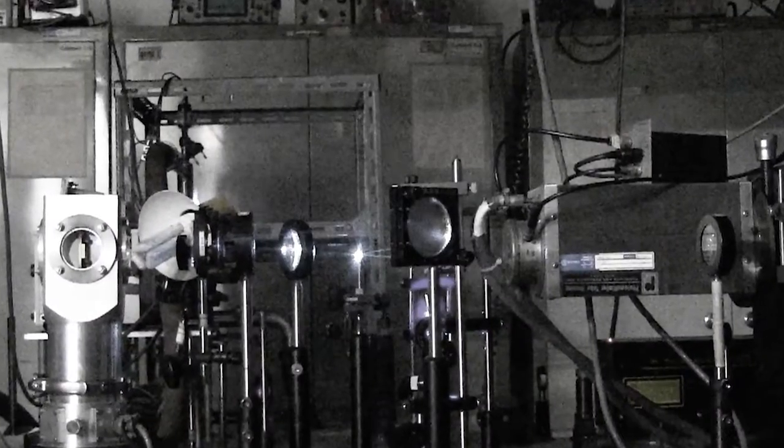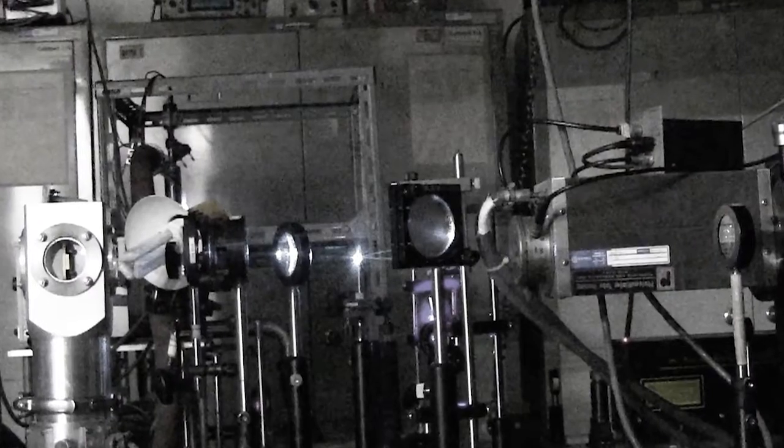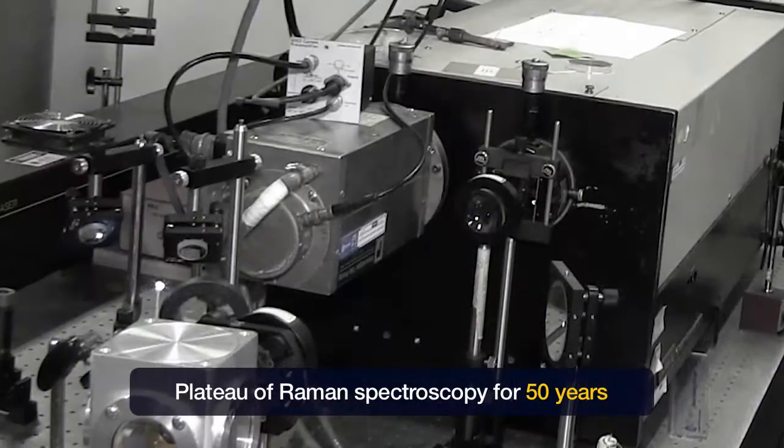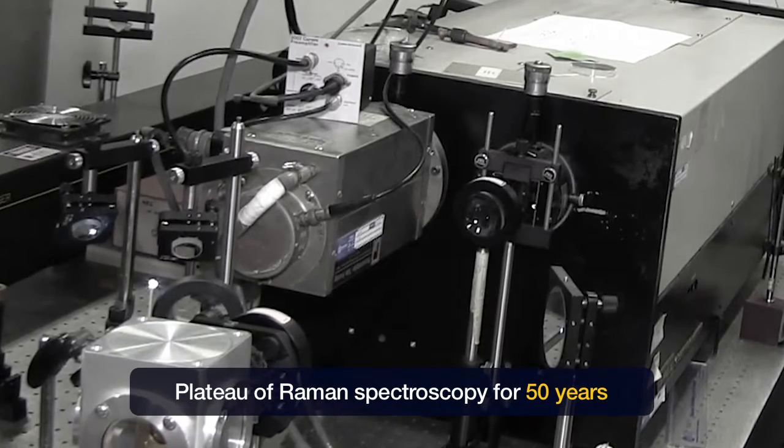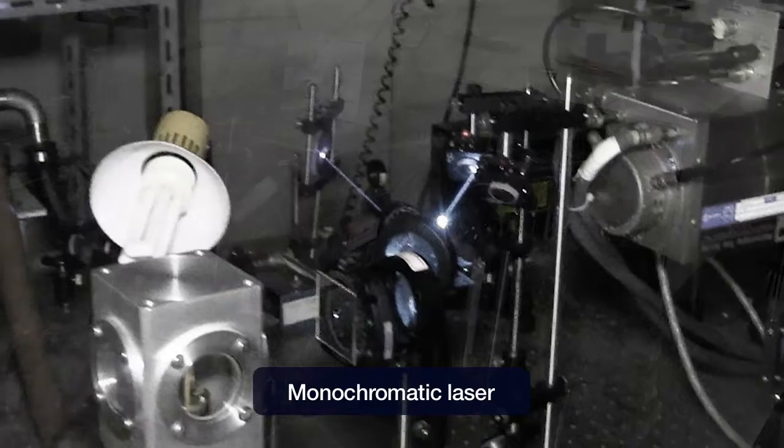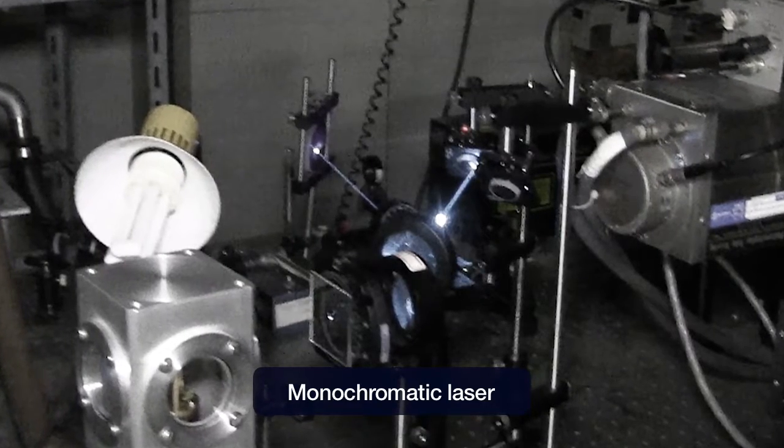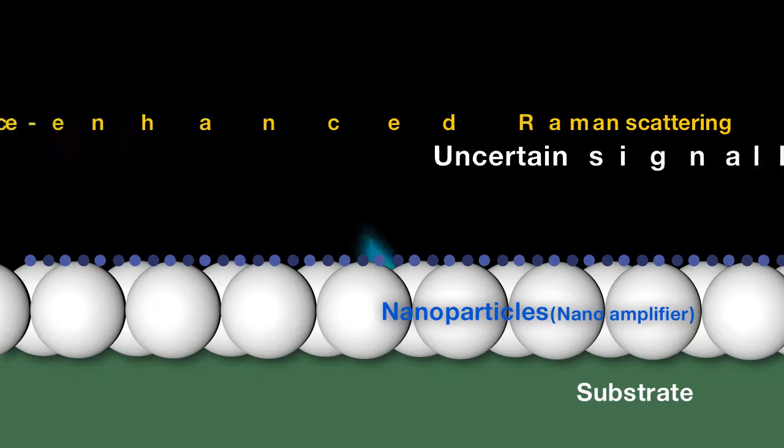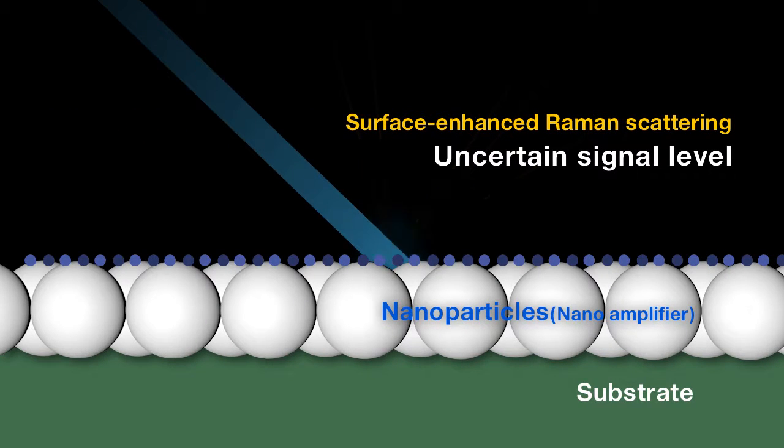However, classical Raman spectroscopy, relying on a lab-based light source, did not really proceed much for the next 50 years until the 1970s. In the 1970s, coherent and monochromatic light sources, so-called lasers, were invented and surface-enhanced Raman scattering phenomena were discovered.